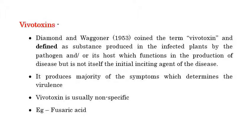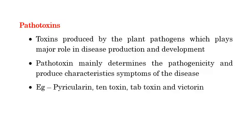The third category is pathotoxins. The name itself indicates these are toxins produced by plant pathogens that play a major role in disease production and development. Pathotoxins mainly determine pathogenicity and produce characteristic symptoms of the disease. Examples include pyricularin, tentoxin, tabtoxin, and victorin — these are all host-specific toxins that come under the group of pathotoxins.